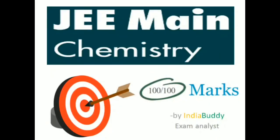Hello everyone. Welcome to my channel India Buddy. I am an exam analyst and my work is to analyze different types of papers and find the scoring patterns. Today's topic is JEE Main Chemistry. I have analyzed the last 20 years of papers and found a scoring pattern using which you can get 100 out of 100 marks in JEE Main Chemistry. That is all 25 questions correct.